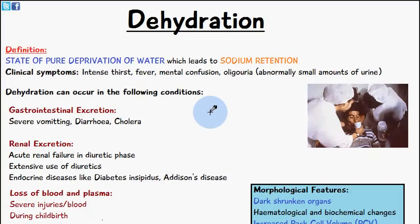Dehydration can occur in the following conditions. In cases of gastrointestinal excretion, we can get dehydrated through severe vomiting, diarrhea, and cholera. Through cases of renal excretion, we can get dehydrated in acute renal failure in the diuretic phase. We can also get dehydrated with extensive use of diuretics, and dehydration can also occur in endocrine diseases like diabetes insipidus and Addison's disease.